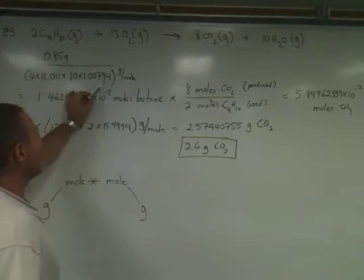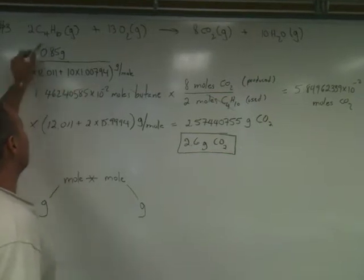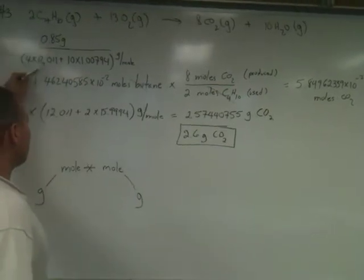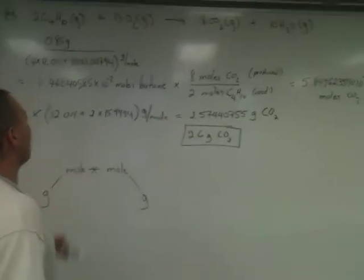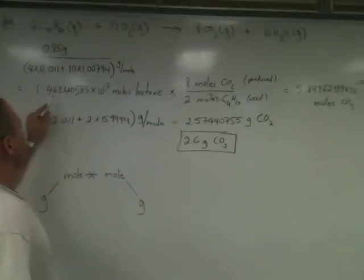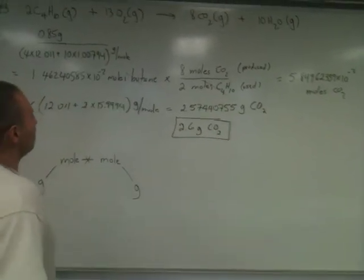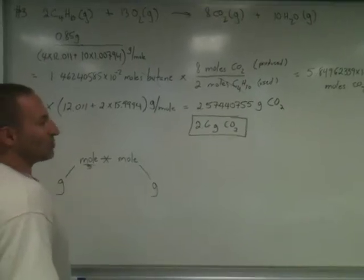There are 4 carbon atoms in butane, so we multiply the molar mass of carbon by 4. That gives us 1.46 times 10 to the minus 2 moles of butane. So we're here now. We're at the moles.